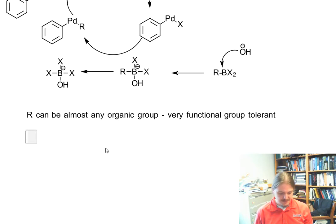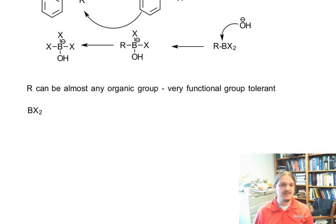The BX2, some of the common things for BX2 include, like, where I need my R and I have boron and the boron might actually be like a boronic acid. So the X's can be OHs.